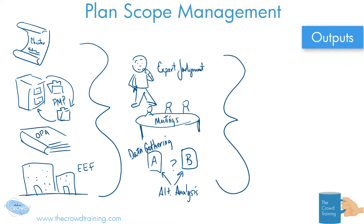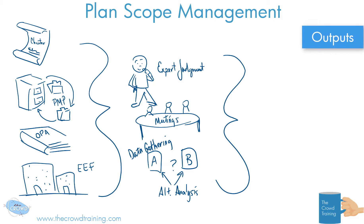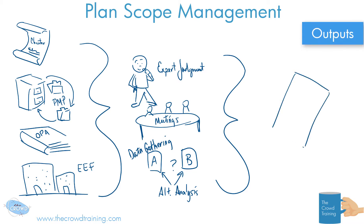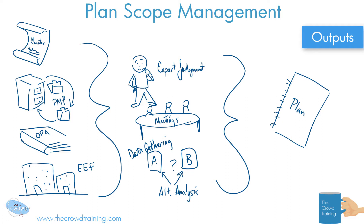Your outputs should be pretty obvious. If the whole idea here is to figure out how to best manage the scope of the project — both the product scope and the project scope — then no surprise: it should be our plan for how to manage the scope. So the scope management plan. Pretty straightforward, because that is our goal and objective for this process — to give us some guidance on how we want to best roll things through.